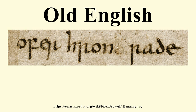Mercian and Northumbrian are together referred to as Anglian. Each of these four dialects was associated with an independent kingdom on the island. Of these, Northumbria south of the Tyne, and most of Mercia, were overrun by the Vikings during the 9th century. The portion of Mercia that was successfully defended, and all of Kent, were then integrated into Wessex under Alfred the Great. From that time on, the West Saxon dialect became standardized as the language of government, and as the basis for the many works of literature and religious materials produced or translated from Latin in that period. The later literary standard known as Late West Saxon, although centered in the same region, appears not to have been directly descended from Alfred's early West Saxon. For example, the former diphthong IY tended to become monophthongized to I in Early West Saxon, but to Y in Late West Saxon.